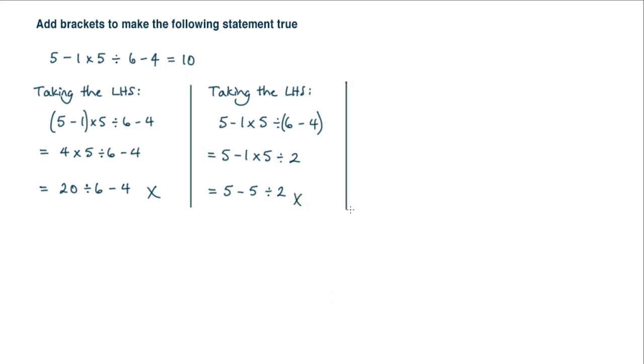Now the only thing left to do would be to add brackets around both sets here. Let's try that. So we're going to take the left hand side again. So I've got 5 minus 1 multiplied by 5 divided by 6 minus 4. And we're popping brackets around this pair and this pair here.